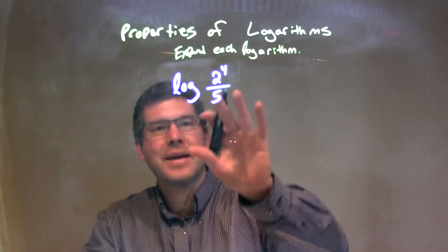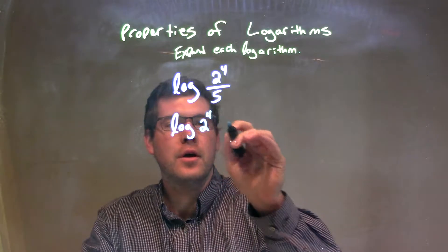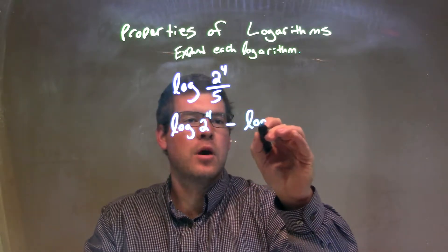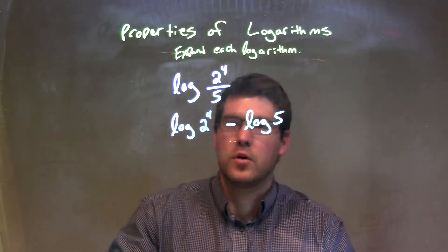I can expand this, my first step here, to be log of the numerator, which is 2 to the 4th, minus log of the denominator, which is 5. Now I have log of 2 to the 4th minus log of 5.